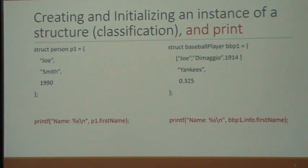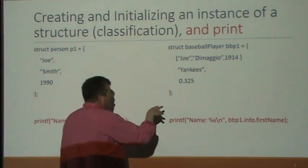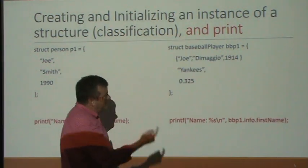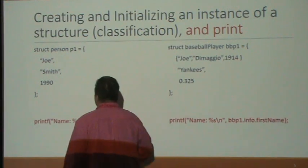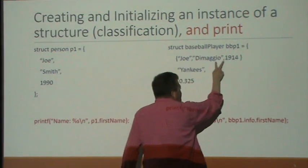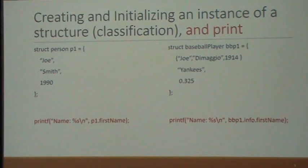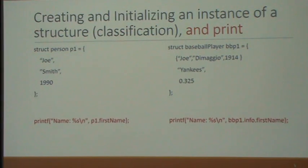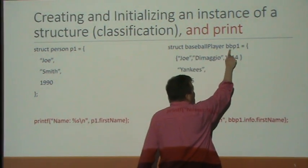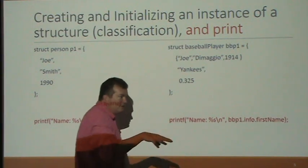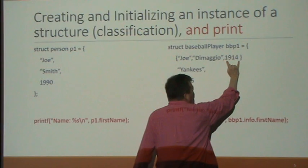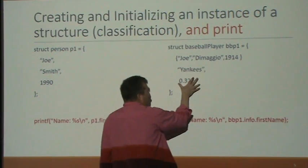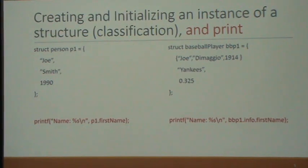To initialize a baseball player, you'd say 'struct baseball_player BBP1.' The first field is the person field with those three sub-fields, so you pass those as a group to initialize the person part of the baseball player structure. Then you give the additional fields — team and batting average. So you could create BBP1 initialized to Joe DiMaggio, 1914, and then his team and batting average.